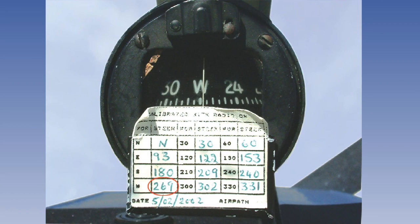Deviation is calculated and applied to the magnetic heading to obtain compass heading. It is usually quoted in degrees east or west, but can also be referred to as either positive or negative.